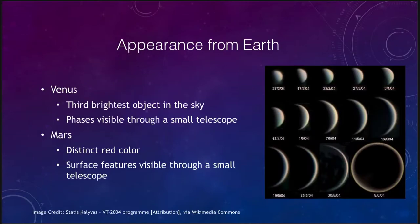What do we see from the Earth? Venus is the third brightest object in the sky — only the Sun and the Moon would be brighter. It is one of the very easiest objects to see, either early in the morning right before sunrise or in the evening right after sunset. It is very prominent in the sky and very hard to miss because it is such a bright object.